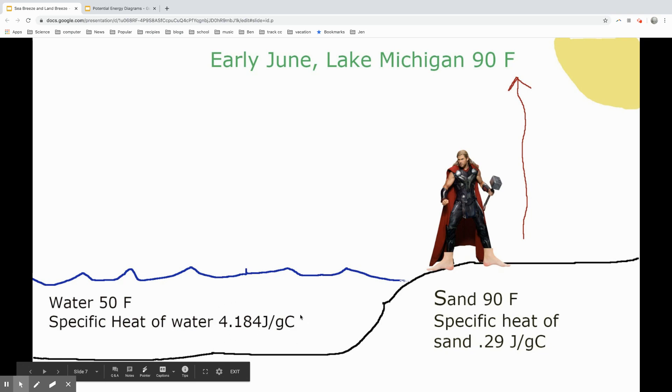This very high specific heat prevents the water from heating up too quickly or cooling down too quickly. So we have a situation where Thor may think the sand is hot, but when he jumps in the water, he's going to be shocked by the temperature.